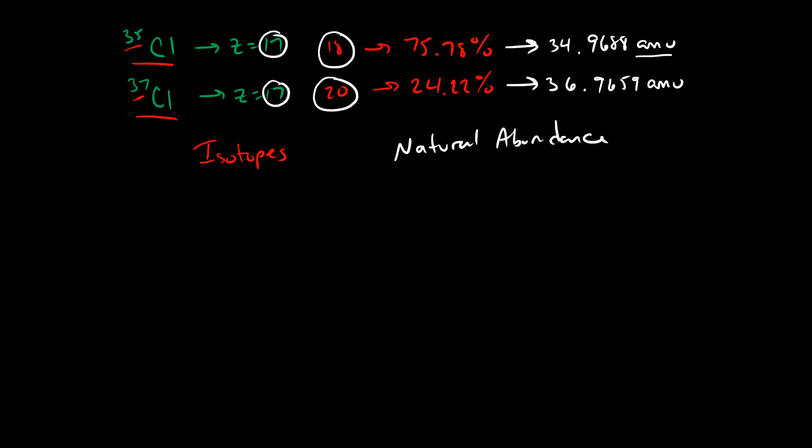And this is the idea of natural abundance. So our goal over the next couple of minutes here is to figure out a way to calculate the average isotopic mass that's the most important for our purposes in chemistry.